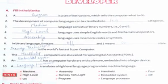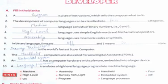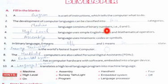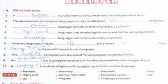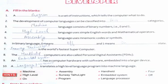Next: the development of computer languages can be classified into dash categories — yes, four categories. Next: dash language consists of binary numbers, that is 0 and 1 — it is machine language. Next: dash language uses simple English words and mathematical operators — high-level language.